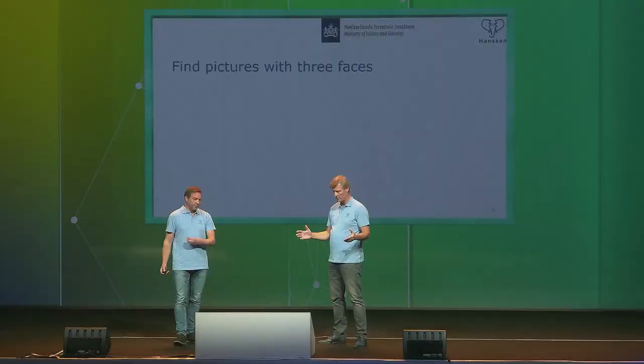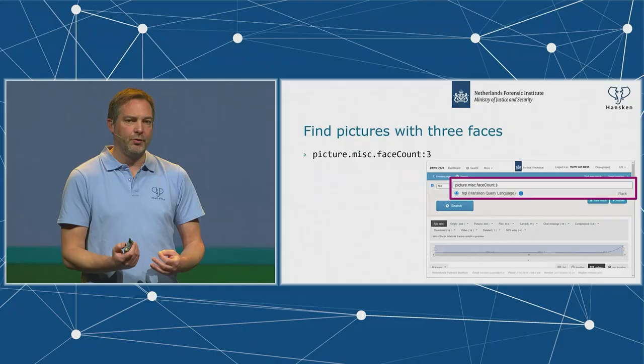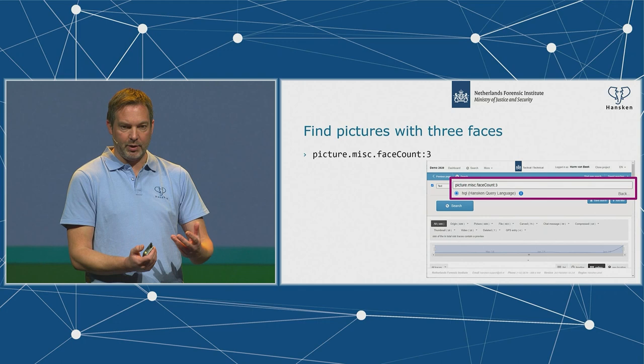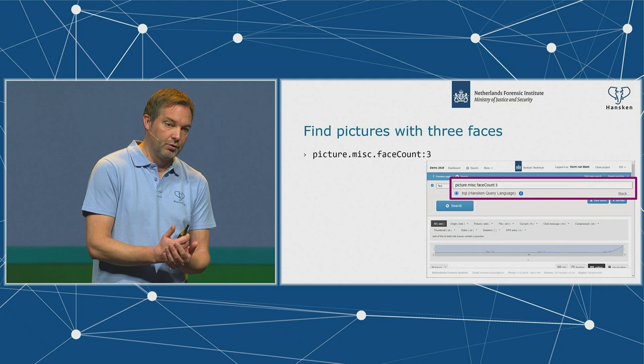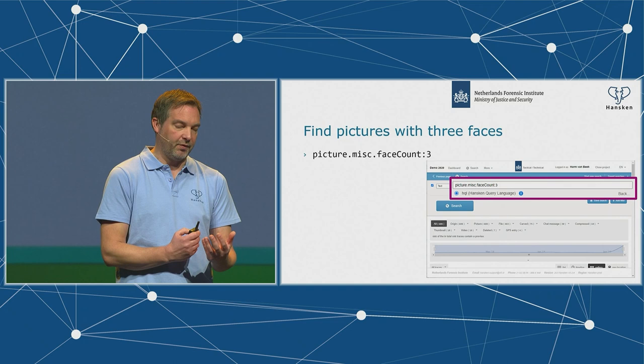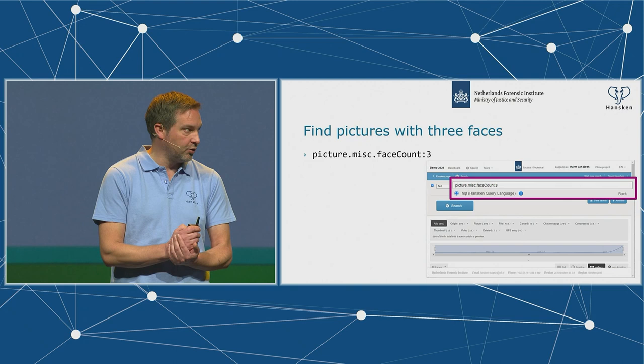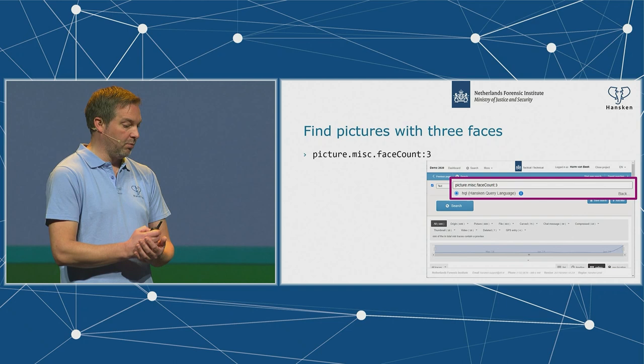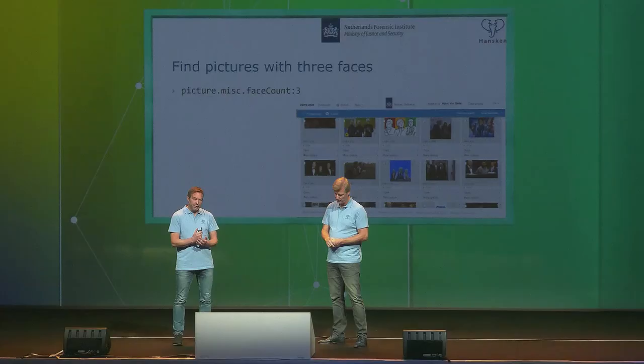The final query: find pictures with three faces. Hansken has a face recognition tool that identifies objects in pictures, counts detected faces, and stores that number in the trace model — currently in a miscellaneous field. You can then say: give me every picture with a face count of three. The results are quite promising — typically all three faces are present.